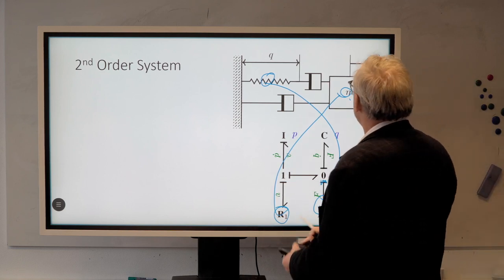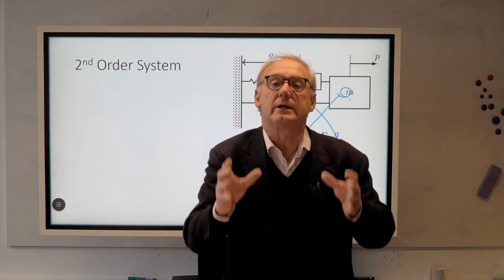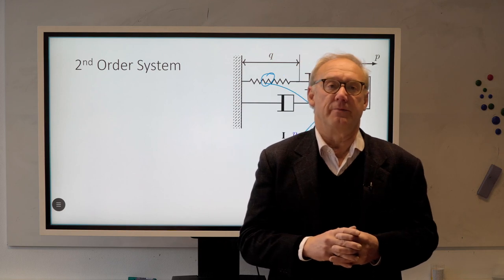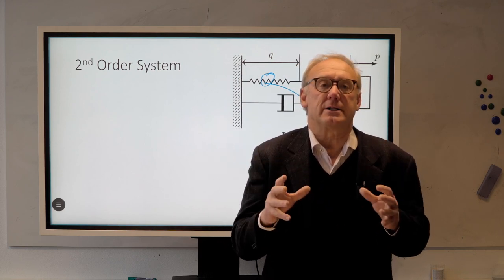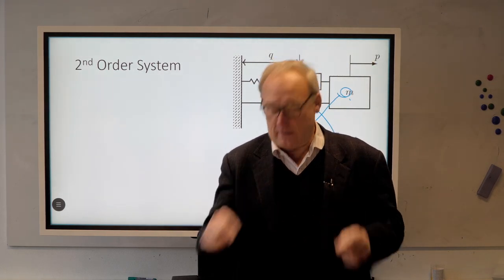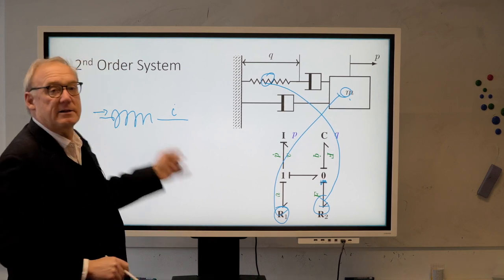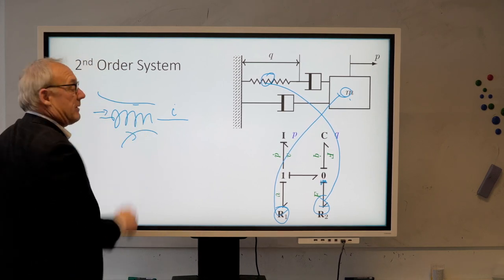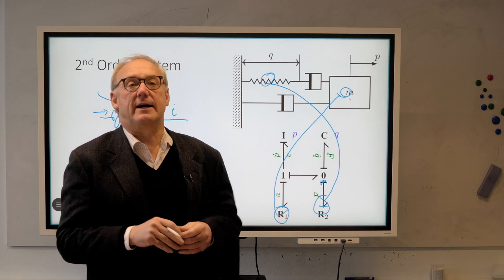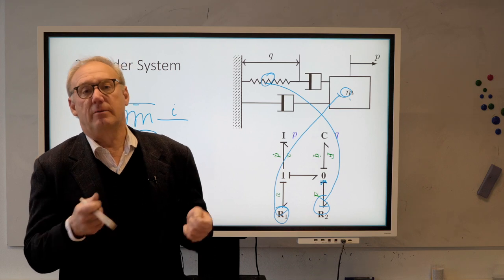What does a mass do intuitively? Well, a mass intuitively, when it has a certain velocity, will keep that velocity. It will take effort or a force to make a change of its velocity. In electrodynamics, what does an inductor do? An inductor has a current going through it, a magnetic field establishes itself, and it will tend to maintain that current. It will be hard to change that current — you will need an effort, in this case an electromotive force, in order to do it.